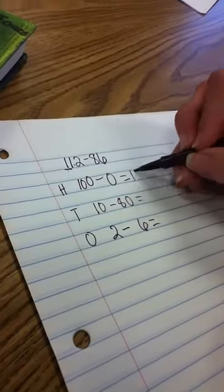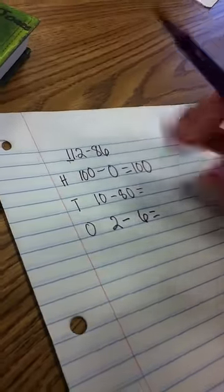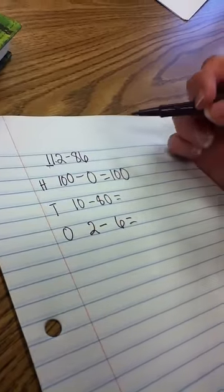100 minus 0 equals 100. 10 minus 80. And because they've been taught like red flags, like oh wait, I'm not supposed to do that, they're going to know that they have to do something special.